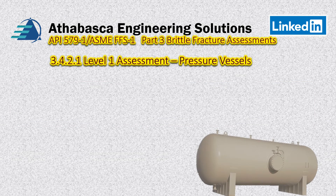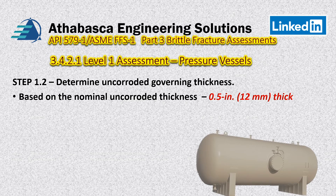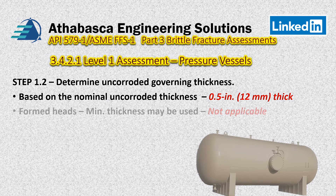Step 1.2: we are determining the uncorroded governing thickness. This mirrors how it is done in Section 8 Division 1. From the different charts and tables, we determine the governing thickness, and for a shell it is a one-to-one relationship — though it gets more complicated with different shapes. Our governing thickness is half an inch.